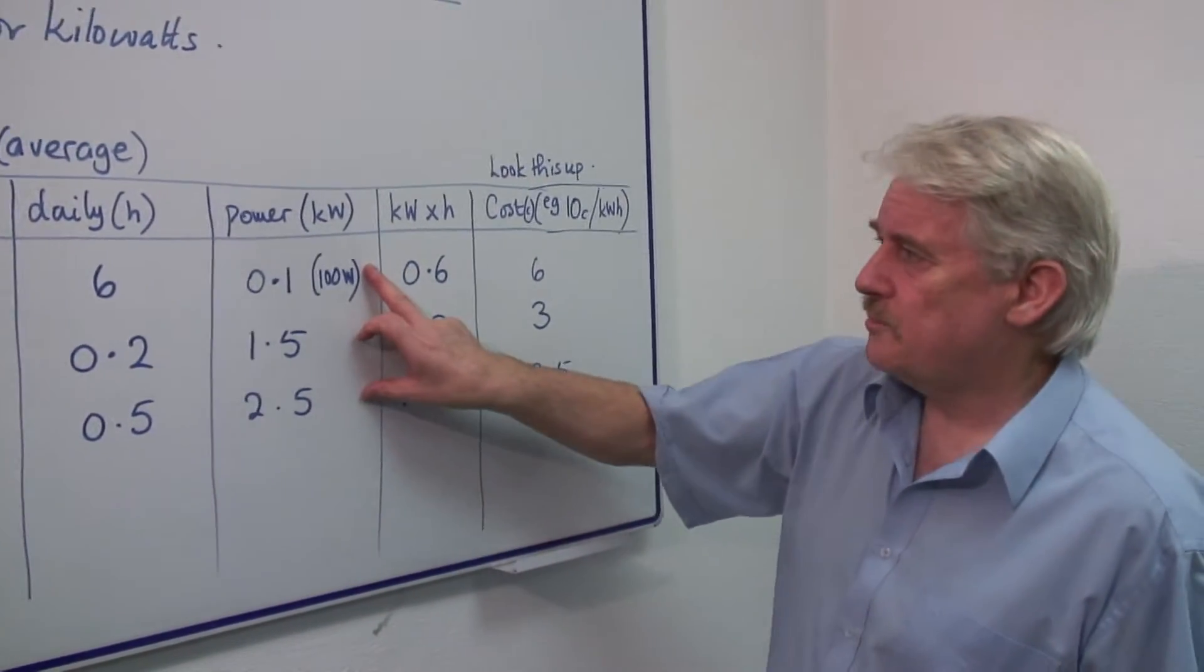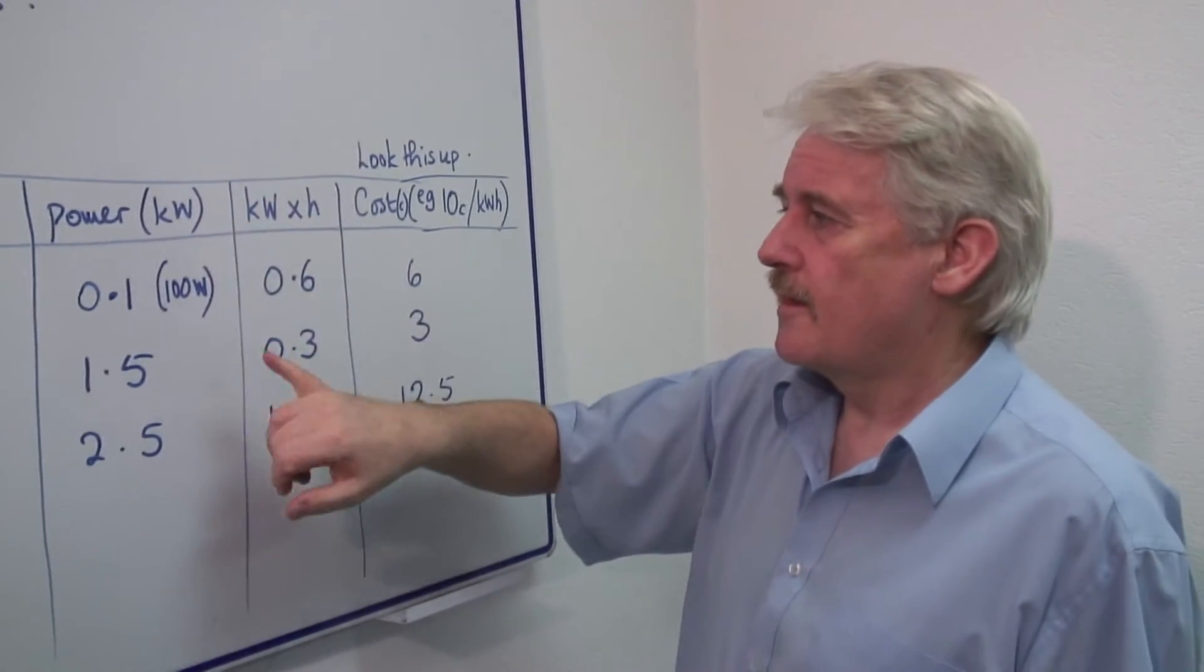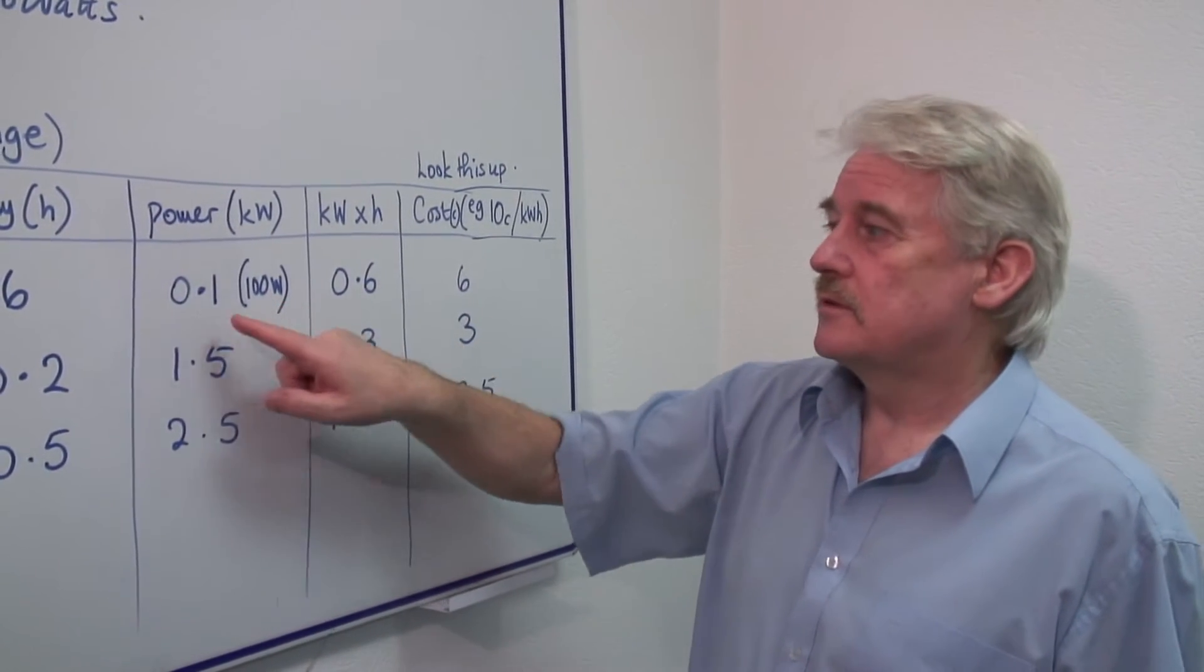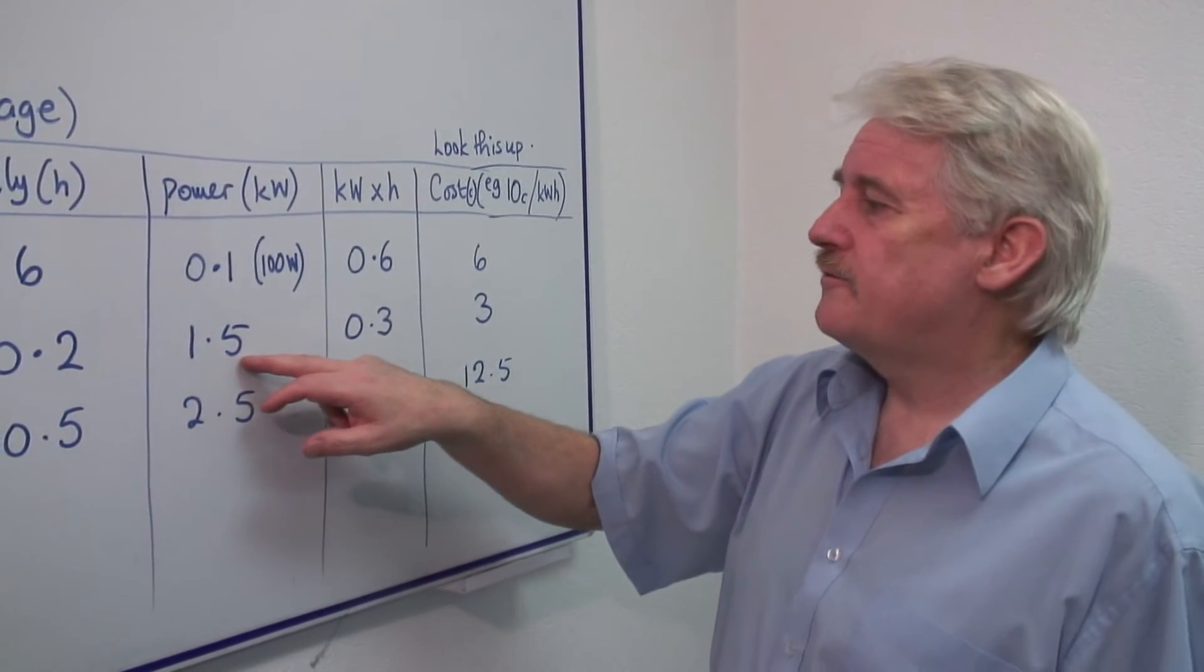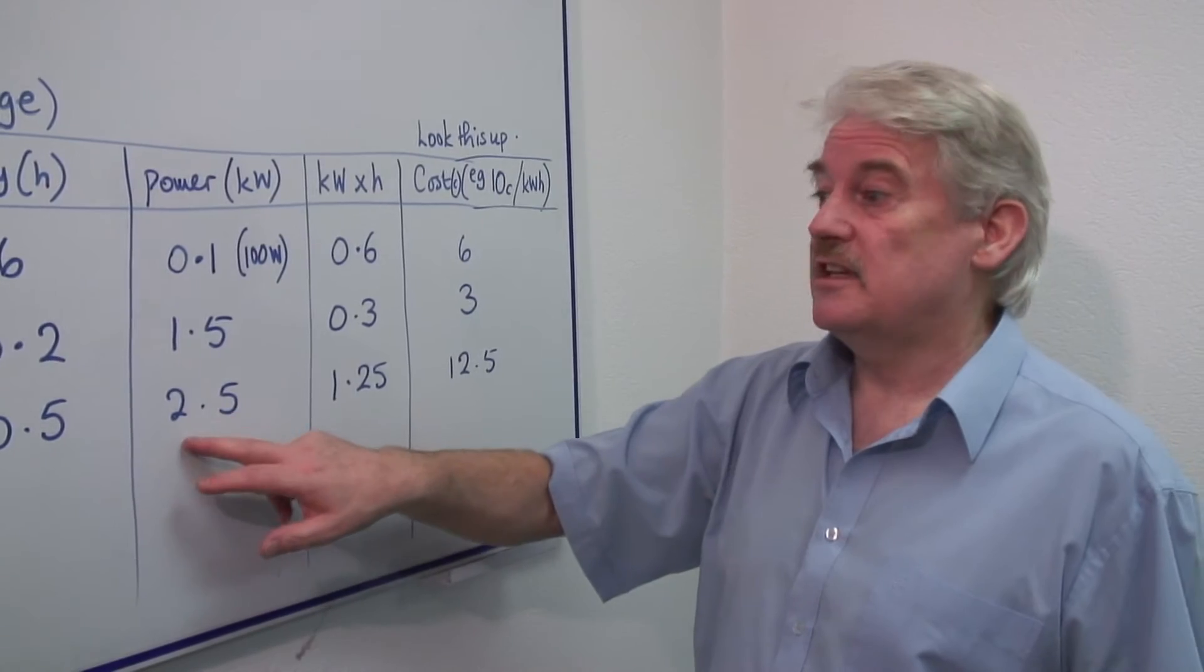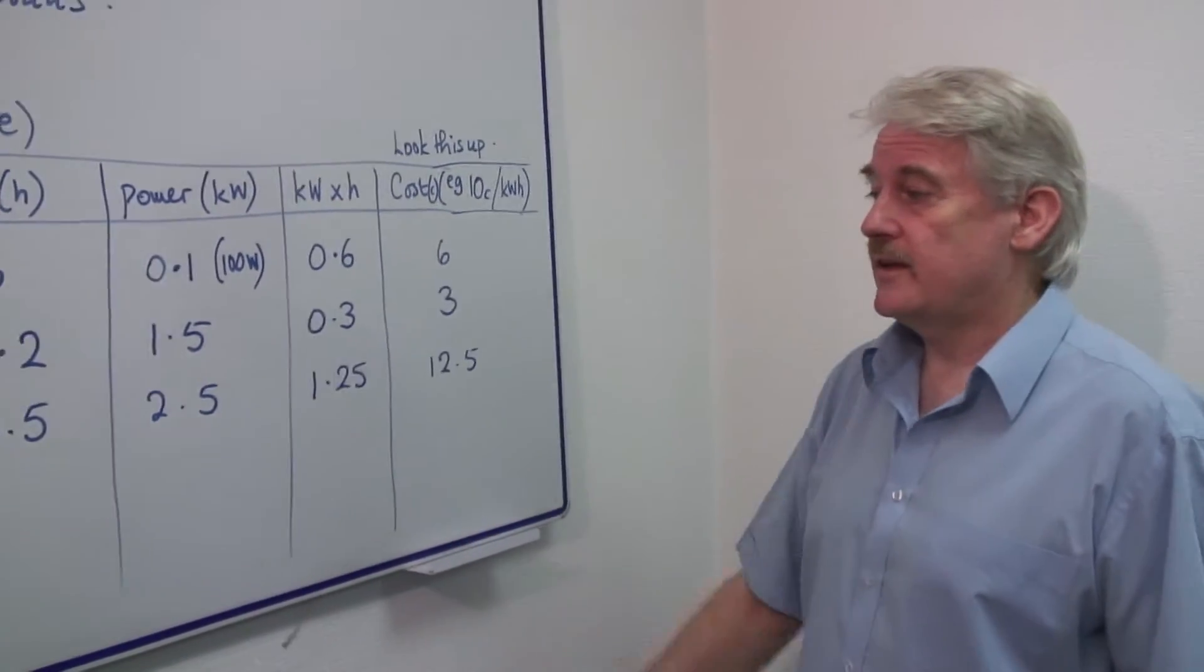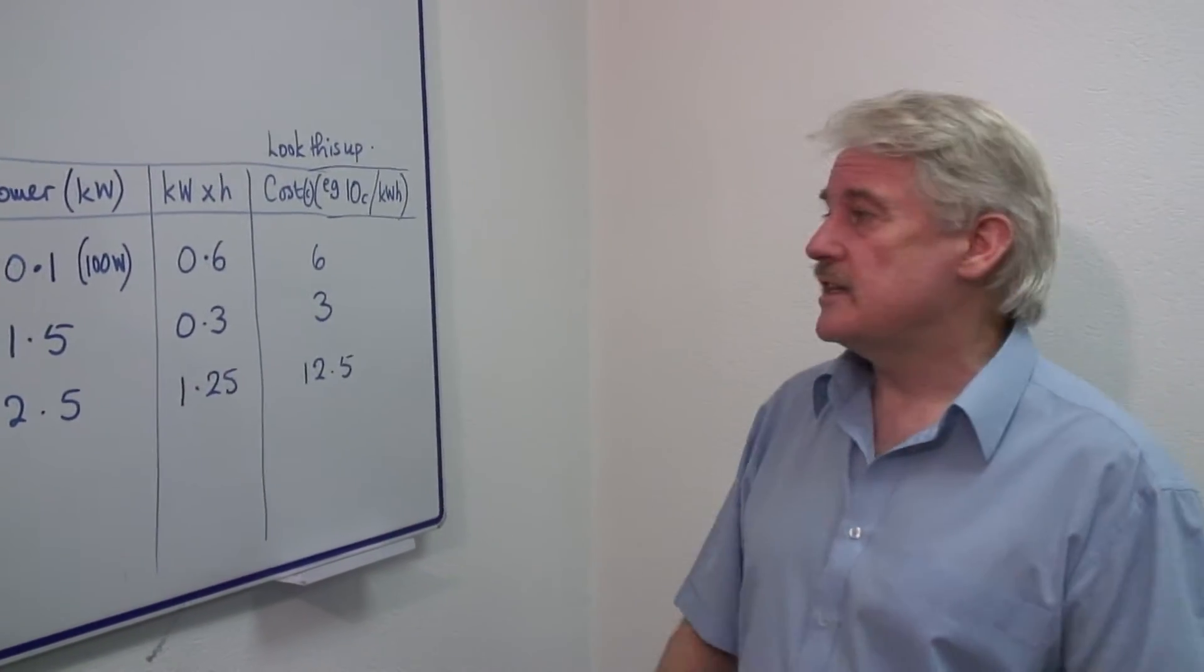Then look at the power, but the power has to be in kilowatts. A typical lamp is 100 watts, that's 0.1 kilowatts. An iron, 1500 watts or 1.5 kilowatts. A kettle, 2.5 kilowatts. Quite powerful are kettles. And they take a lot of current too, something like 12 amps, 13 amps.